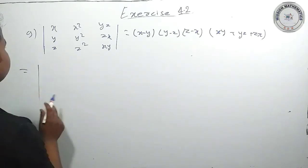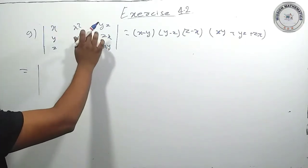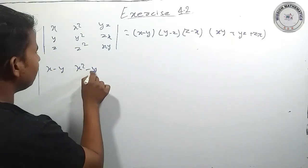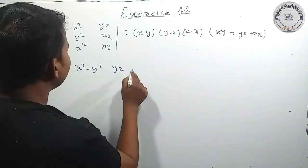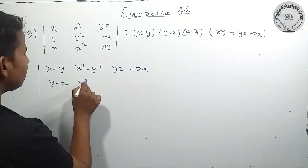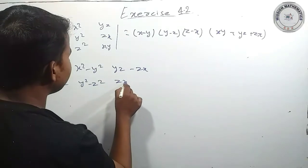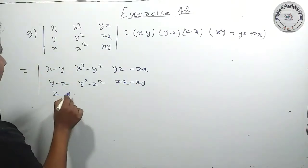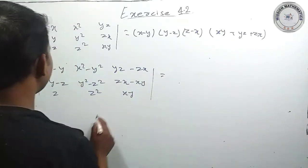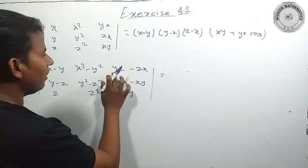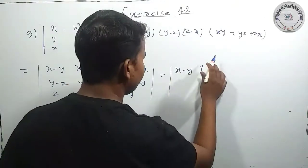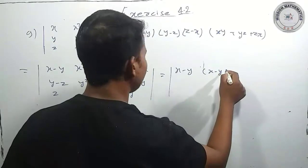तो यहां simply R1 minus R2 करेंगे, तो यहां से x minus y हो जाएगा, और फिर x² minus y², फिर yz minus zx हो जाएगा। और फिर R2 minus R3 करेंगे, y minus z और y² minus z² फिर zx minus xy हो जाएगा।